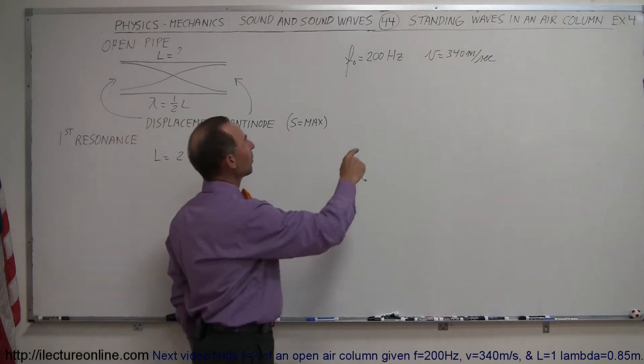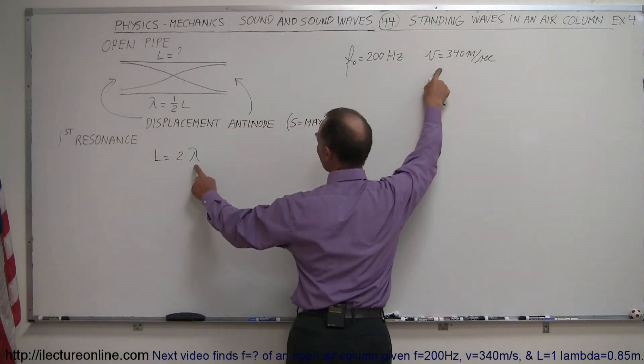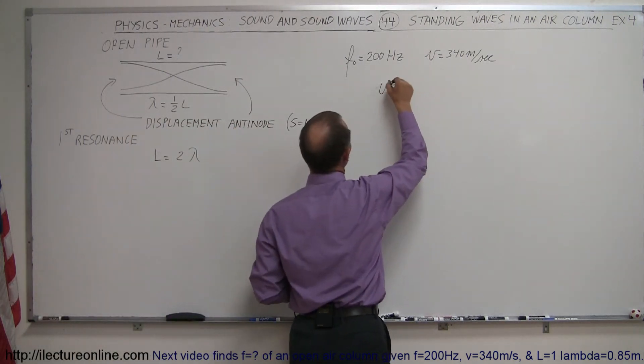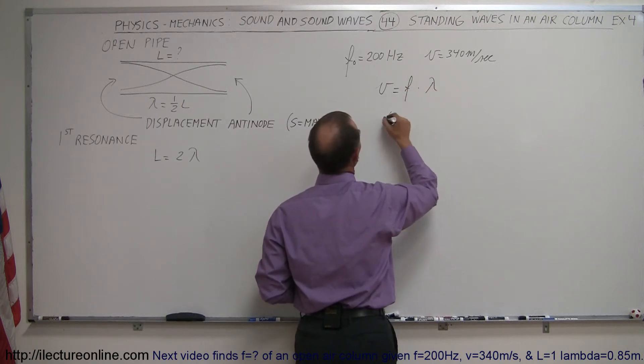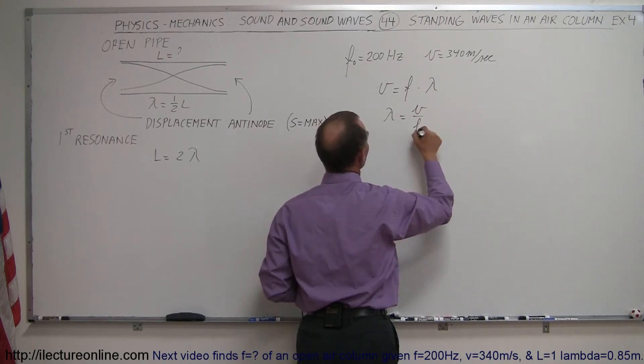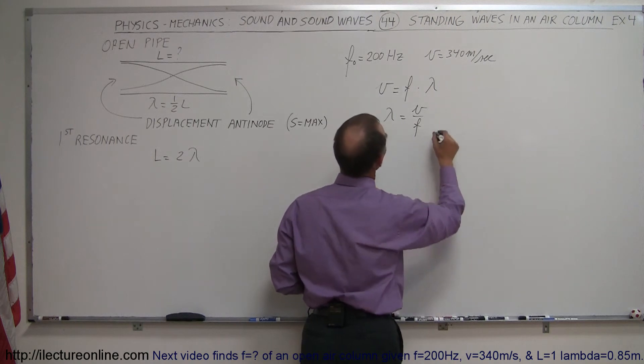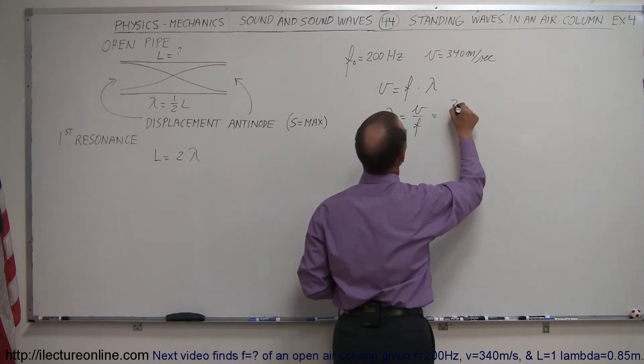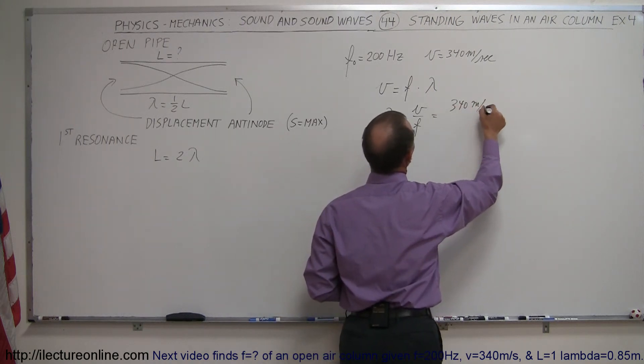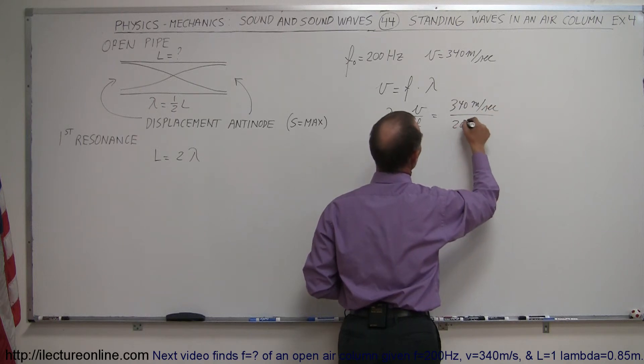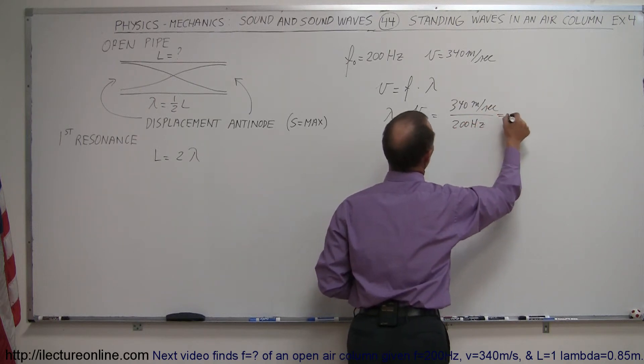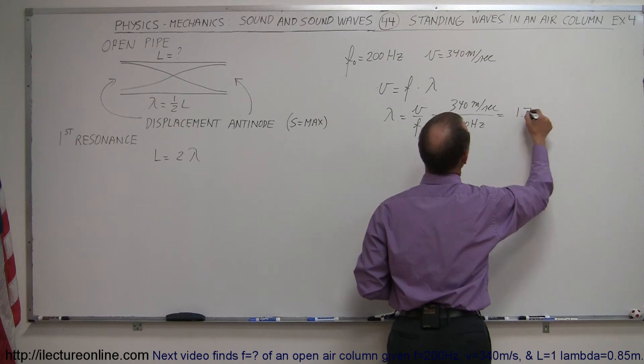Knowing the frequency and velocity, we should be able to figure out what that wavelength is. Because velocity equals frequency times wavelength, therefore wavelength equals velocity divided by frequency. So that's 340 meters per second divided by 200 Hz, which gives us a wavelength of 1.7 meters.